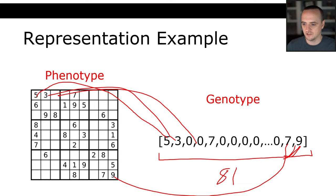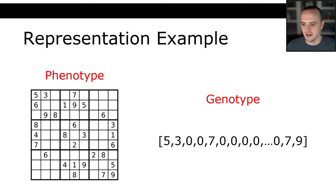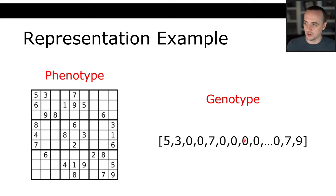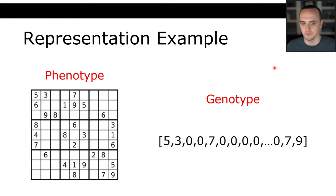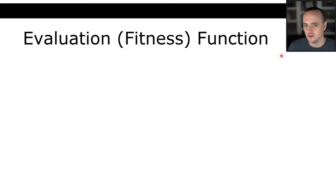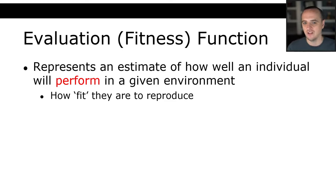In the evolutionary algorithm, all reproduction and mutation happens on the genotype. Then we turn the genotype into the phenotype to evaluate its fitness. The next population has the new genotype — we do crossover and mutation on the genotype, then decode to the phenotype to compute fitness.